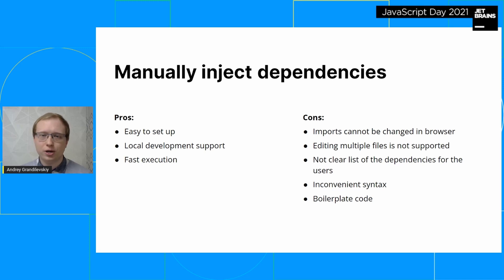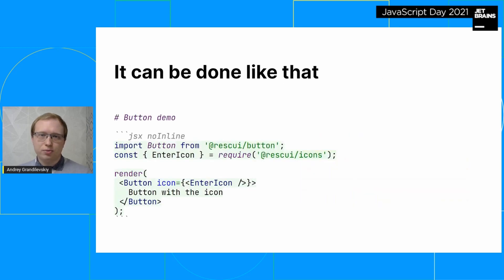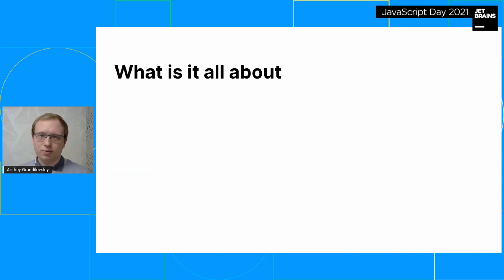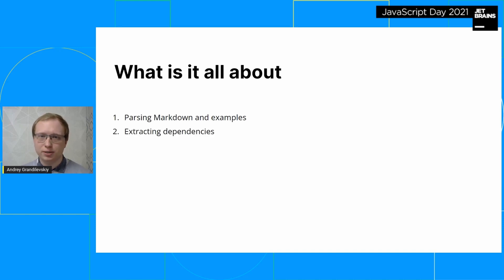But what if we try to get rid of most of the disadvantages specifically related to syntax and automation? A page with the playground of the button might use standard markdown syntax where the component example is a regular code block and dependencies are part of it. But you can't just give it to the browser — it won't be able to resolve its dependencies, which means they need to be processed at build time. That's what I'm going to talk about today: we will parse markdown and examples, extract dependencies out of them, resolve them at build time, and then inject them into the playgrounds on the frontend as a scope.